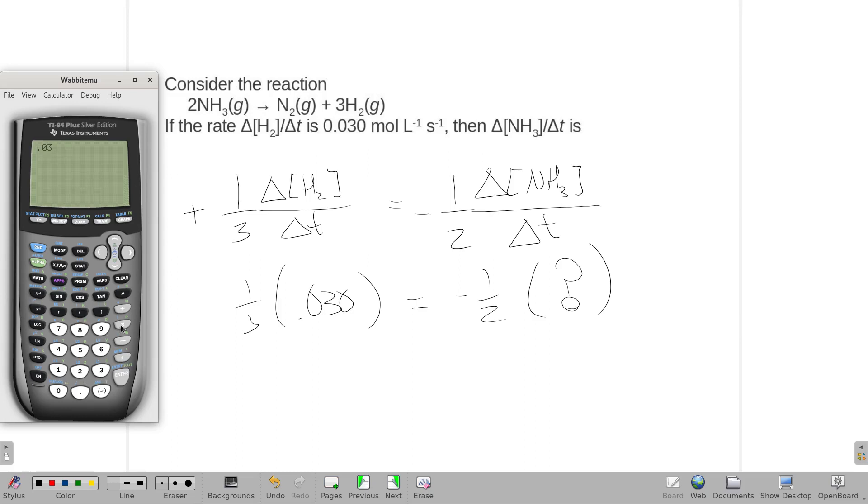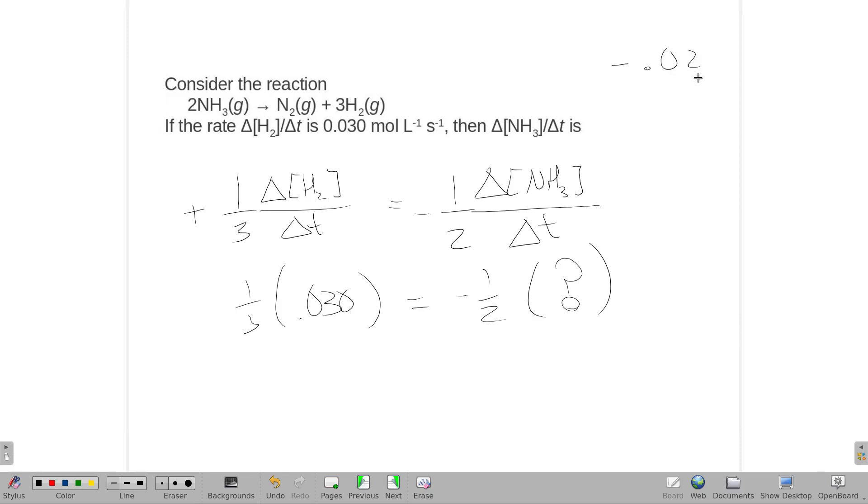So 0.03 times a third and then multiply by two and then make that sign negative. So this rate is negative 0.020 moles per liter per second.